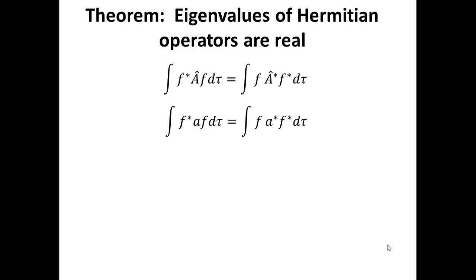And on the right-hand side, we take the complex conjugate version of our eigenvalue equation. When a operator acts on the complex conjugate of f, that returns the complex conjugate of a and the complex conjugate of the function f.